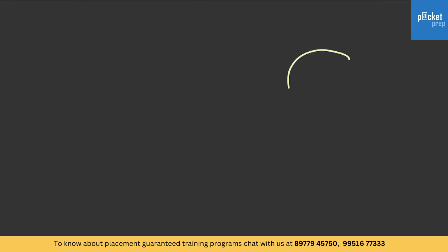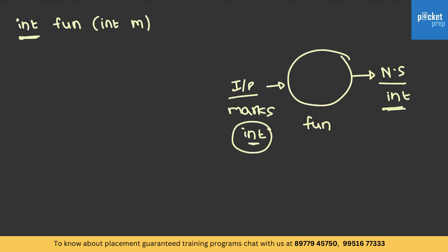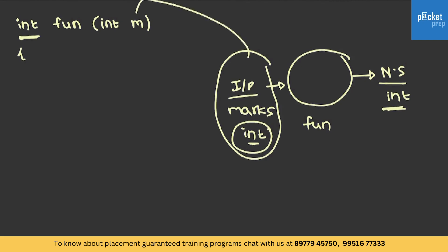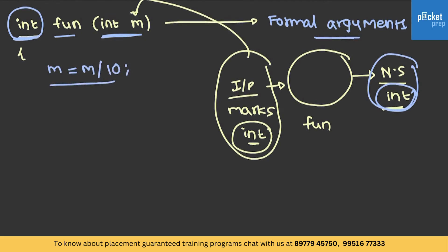Let's try to define this function. Consider a function FUN which accepts the input as marks (an integer) and returns a normalized score which is also an integer. The first part is the return type — int in this case. The function is taking an integer of marks as the input. All the inputs that have to be taken are listed here and are called formal arguments. After defining the formal arguments and the return type, the format is: return type, name of the function, followed by the formal arguments. It has to divide marks by 10 to normalize and send this as output using a return statement.